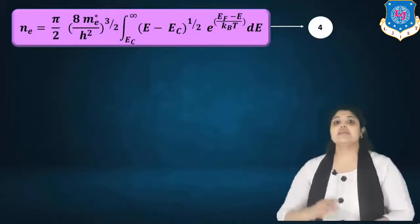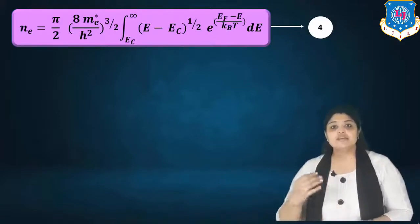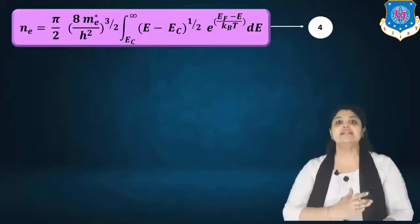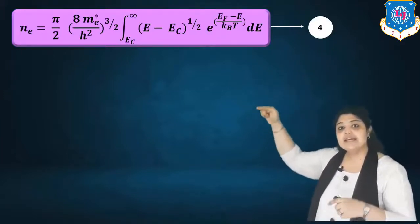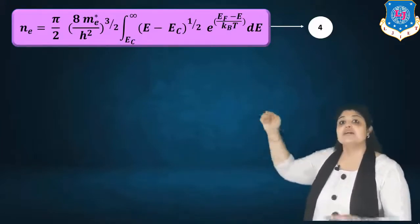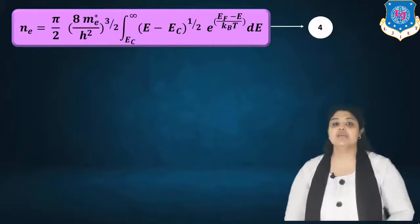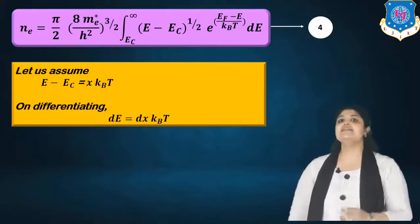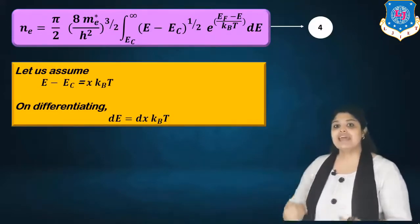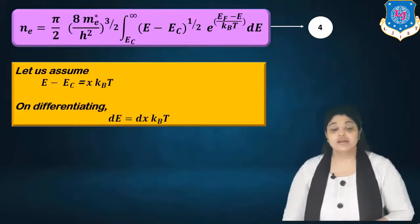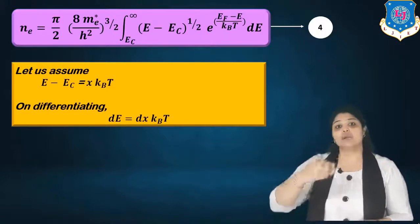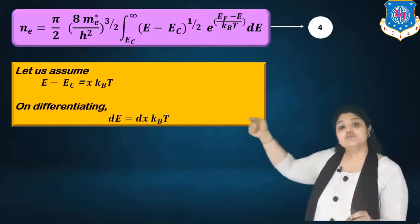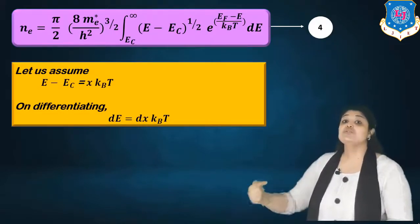Substituting the modified DOS (equation 2) and simplified probability function (equation 4), we get NE = (π/2) × (8ME*/ℏ²)^(3/2) integrated from EC to infinity of (E − EC)^(1/2) × e^((EF − E)/kBT) dE. To solve this, we assume E − EC = x·kBT, so energy E = EC + x·kBT and dE = dx·kBT. The integration limits change: when E = EC, x = 0; when E = infinity, x = infinity.